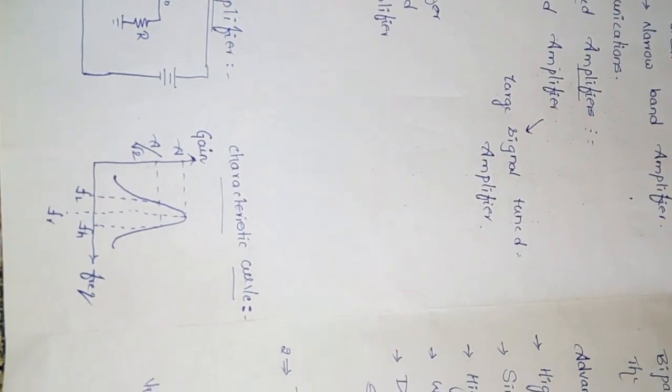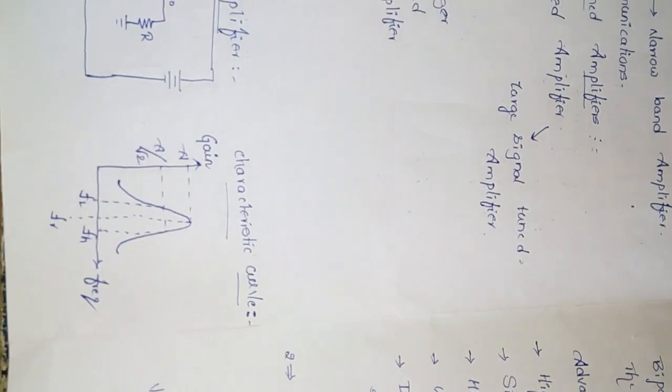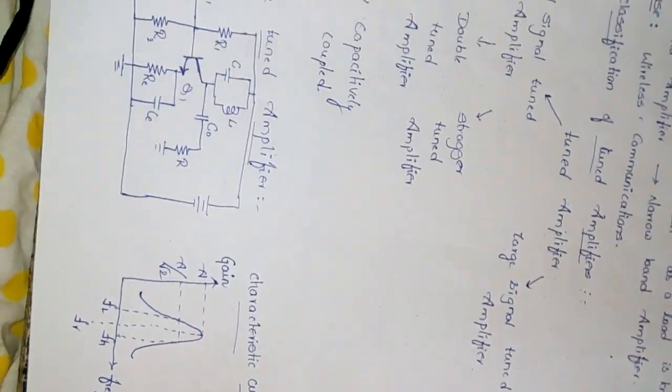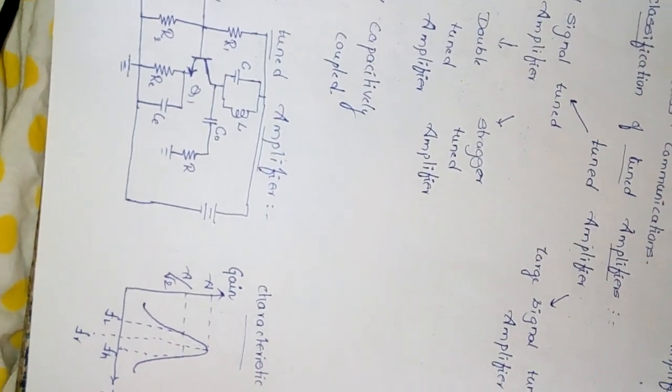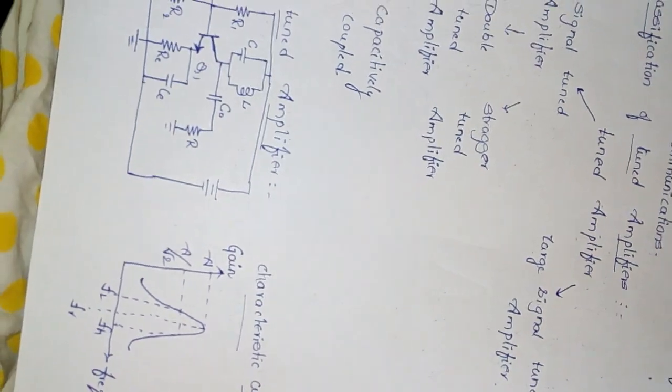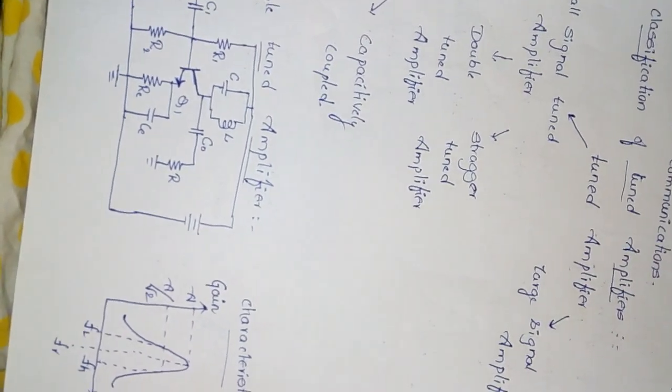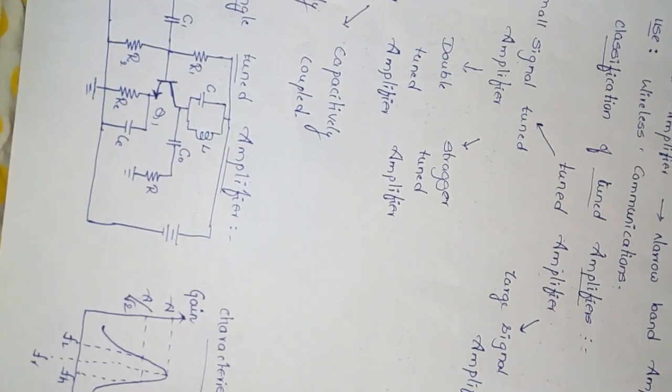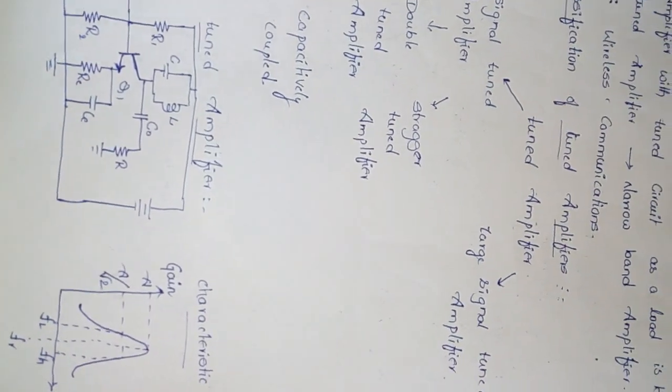In single tuned amplifier, we are having a single tank LC circuit at the collector terminal. This is the characteristic curve. It is having narrow bandwidth. The resistors R1, R2, and RA are called the biasing resistors. CE is the bypass capacitor to increase the voltage gain.